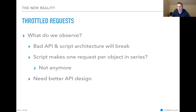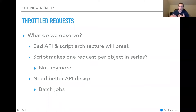We needed better API design and better script design — in these cases, batch jobs. We had scripts that would go through lists of hundreds or even a thousand objects and make a separate request for each one. Converting to batch jobs improved our scripts and reduced load on the system from things running on crons. So it kind of improved our system overall.